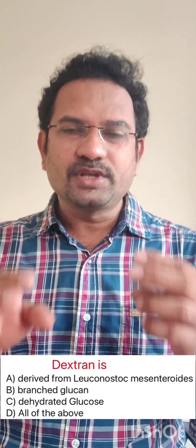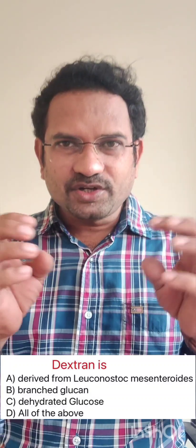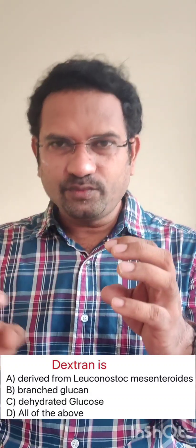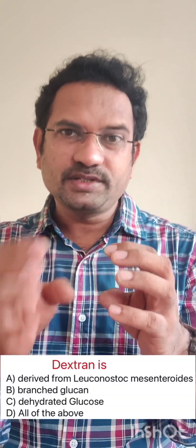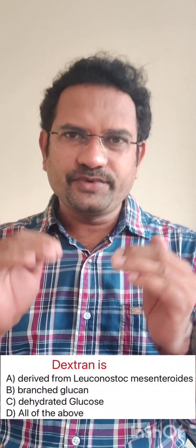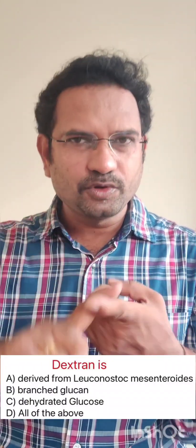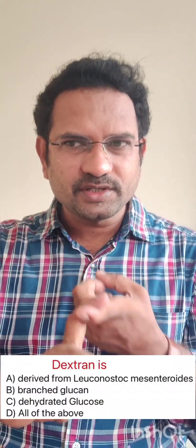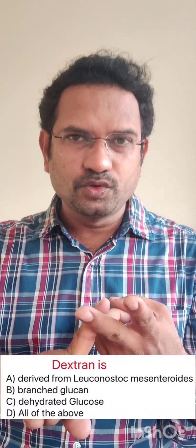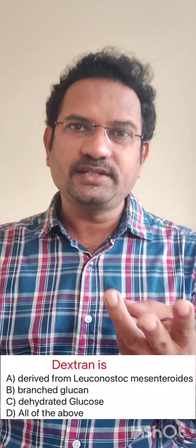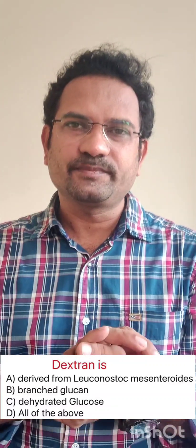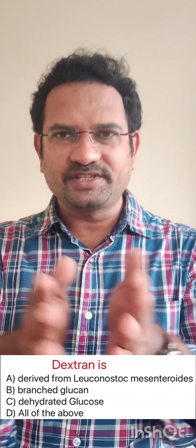Dextran is also described as dehydrated glucose — it is made up of glucose molecules with a water molecule removed. So all options fit: it is derived from Leuconostoc mesenteroides, it contains branched glucan, and it is dehydrated glucose. Therefore, all of the above is the answer. All the best.